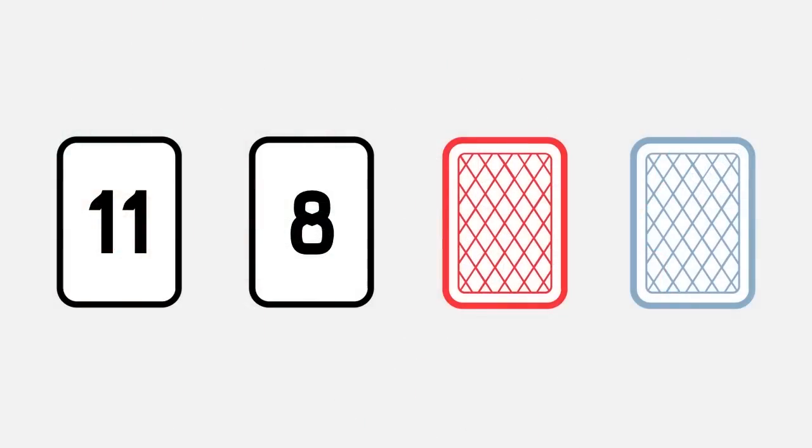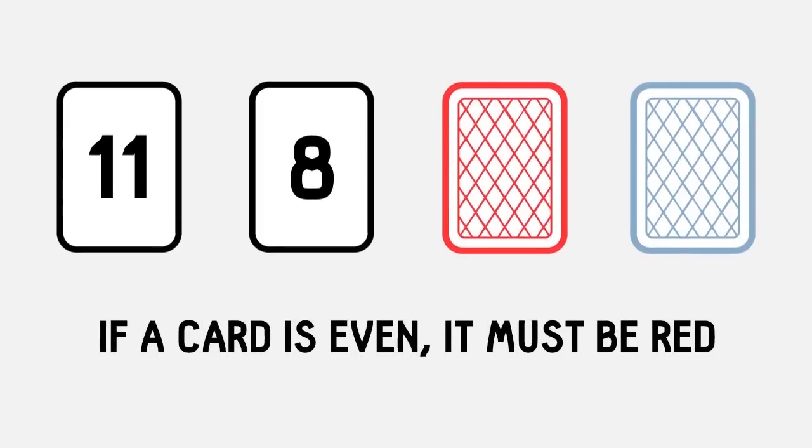For each card, one side has a number and the other side is colored. Below the cards is a rule. If a card has an even number on one side, it must be red on the other.